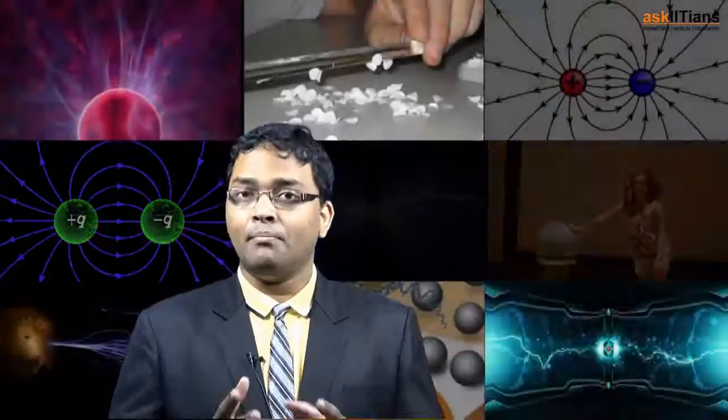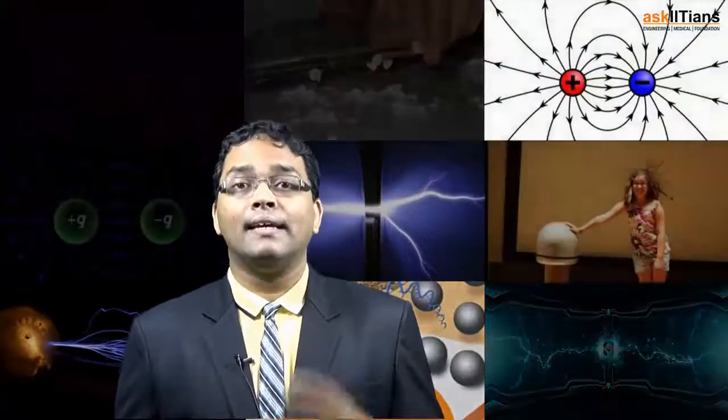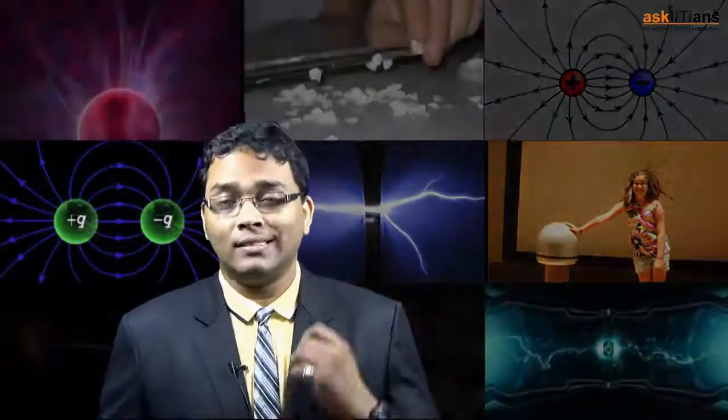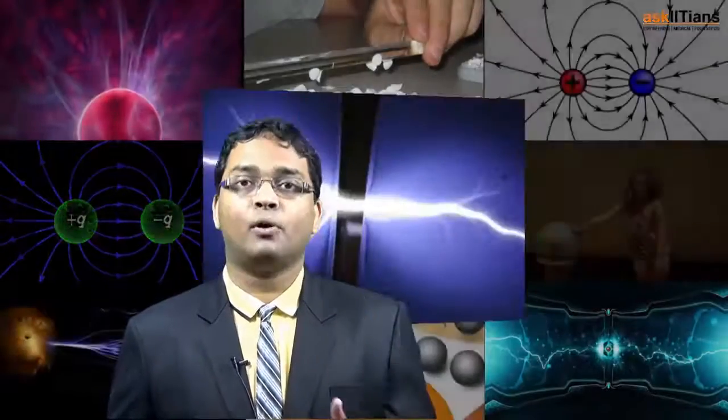So now we come to the last part. Here we'll be discussing what exactly is an electric dipole. As I mentioned at the end of the last part, an electric dipole consists of two poles—a positive charge pole and a negative charge pole.